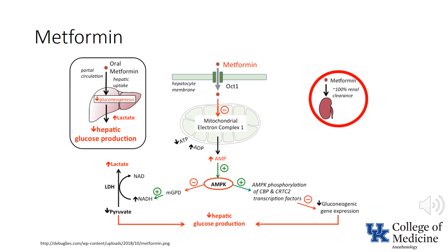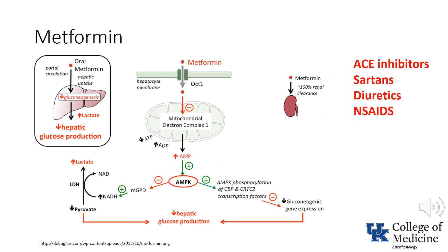Note that metformin relies completely on renal clearance. Renal failure is a significant risk factor for the development of toxicity, that is, for the development of lactic acidosis. Most experts consider that a creatinine clearance of less than 60 mL per minute constitutes a threshold for the increased risk of lactic acidosis. Other risk factors include severe heart failure, generally defined as an ejection fraction of less than 30%, the administration of iodinated contrast agents, and other factors associated with compromised renal function, such as dehydration and fasting.